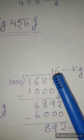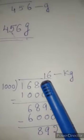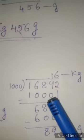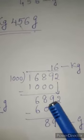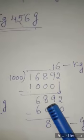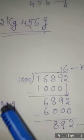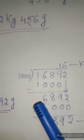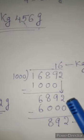Here you see 1000's table. 1 into 1000, 1000. You will write 1 here and 1000 here. Now subtract 9 minus 0, 9. 8 minus 0, 8. 6 minus 0, 6. 1 minus 1, 0. Now bring down these 2 with it. Now 6892.